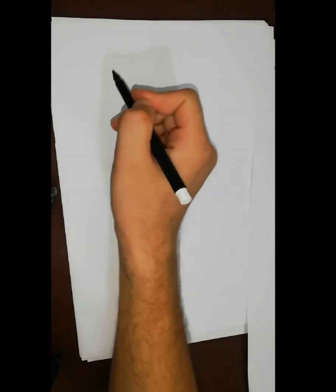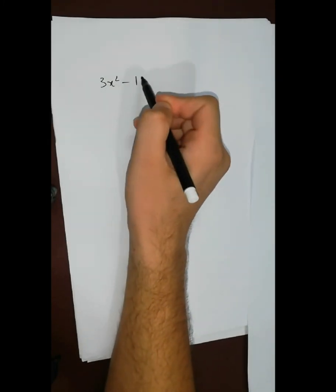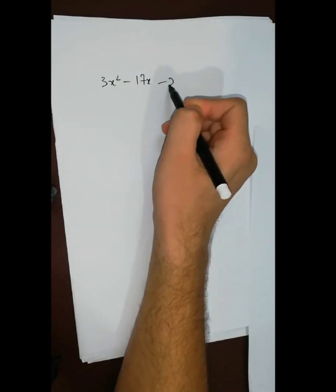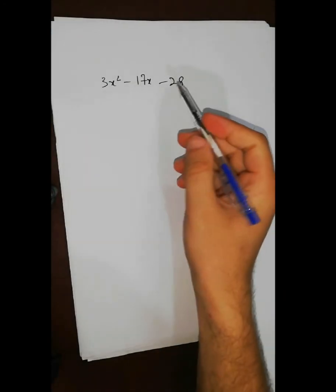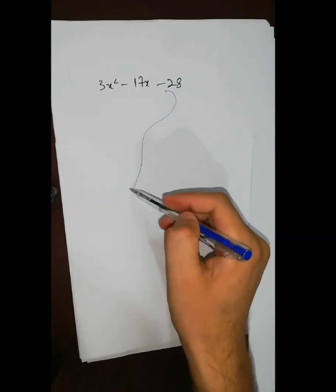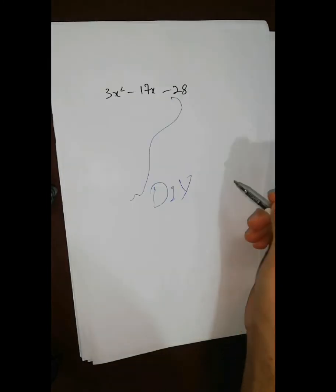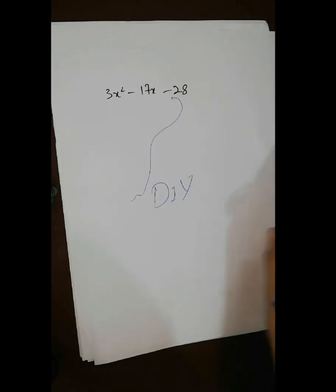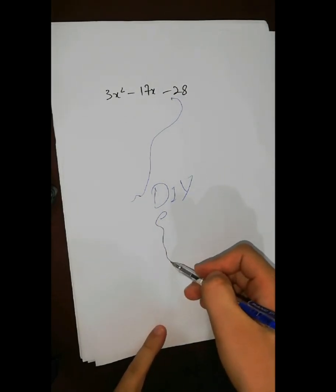Now, the next example is 3x squared minus 17x minus 28. This one you will have to solve on your own and send the answer, and your name will be mentioned in the next video. See you, bye bye.